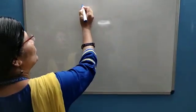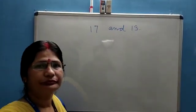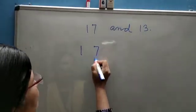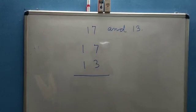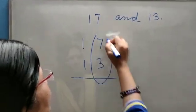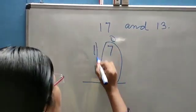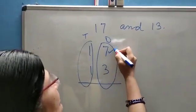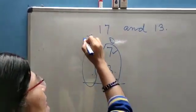Suppose you have given two numbers: 17 and 13. Now place these two numbers in a vertical column — 17 and 13. This is ones place and this is tens place. Seven is at ones place, one is at tens place. Three is at ones place, one is at tens place.